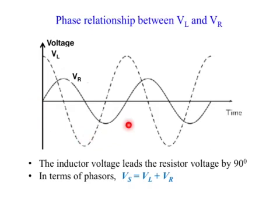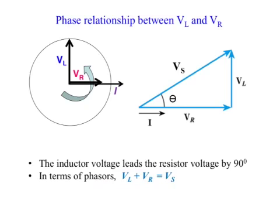From the graph, we can see that the inductor voltage is leading the resistor voltage by a quarter of a cycle. And in terms of phasors, the supply voltage is equal to inductor voltage plus resistor voltage.